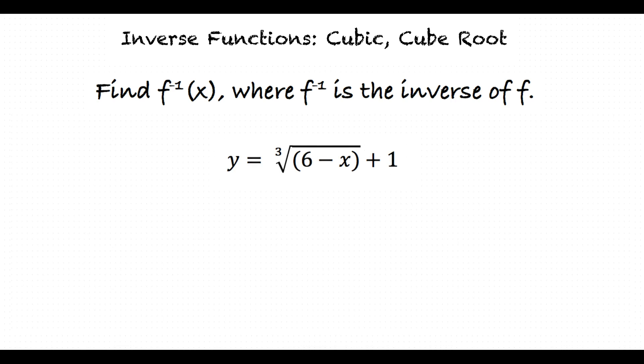Now that our function reads y equals cube root of 6 minus x plus 1 we can take the inverse of this function. Switch the places of x and y to result in the new equation of x equals cube root of 6 minus y plus 1. I think that I understand how to get to this point but what's the next step?